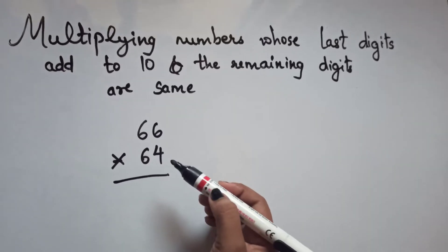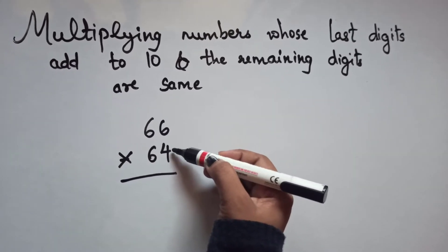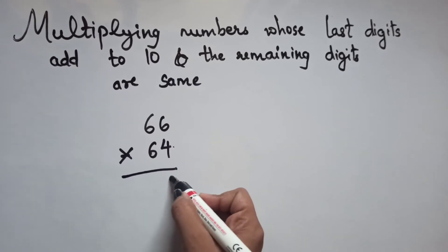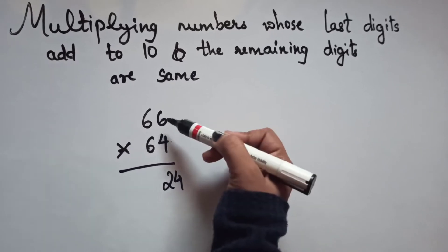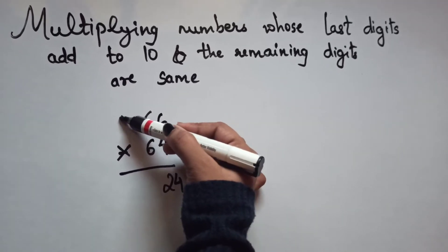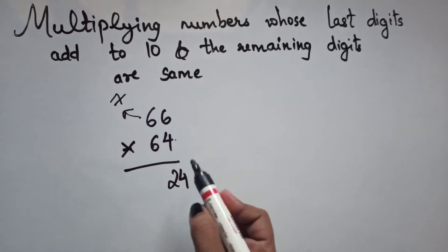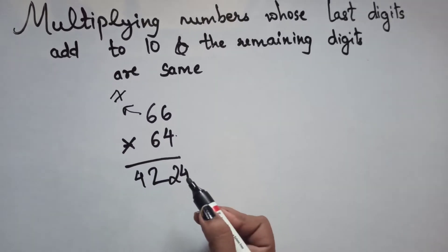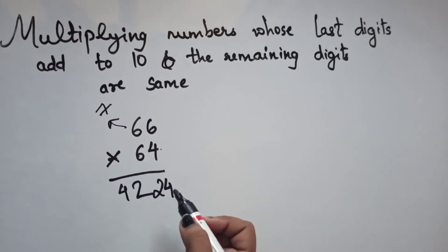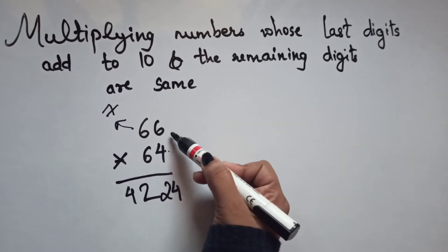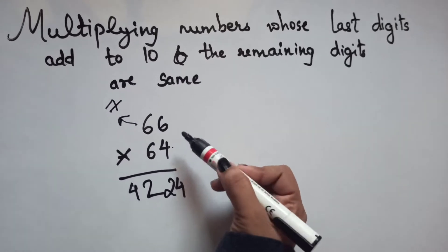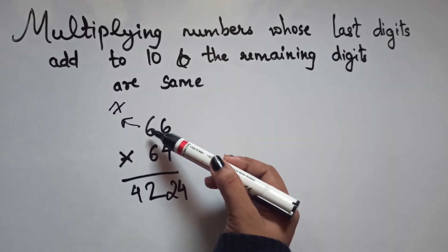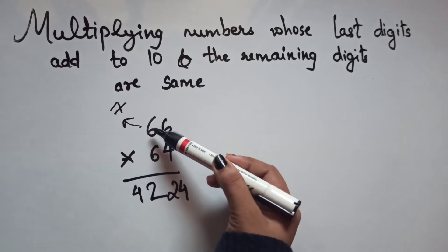First, multiply the unit digits: 4 × 6 = 24. Then after 6 comes 7, so 6 × 7 = 42. We multiply the tens digit by the next consecutive number. So 66 × 64 = 4224.